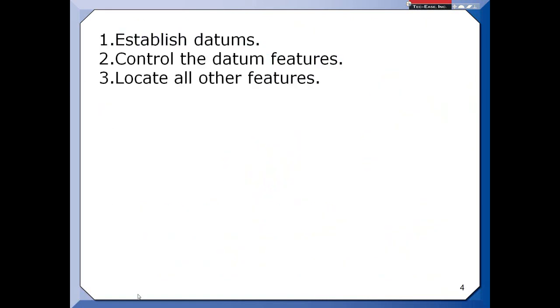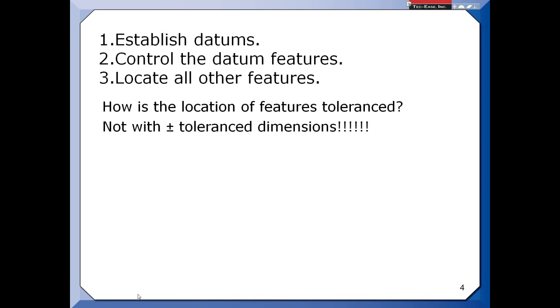So once again, we establish our datums, we control the datum features, and then we have to locate everybody else. So the question becomes, how should I tolerance the location of these other features? Well, not with plus minus tolerance dimensions. Get over that, will you?